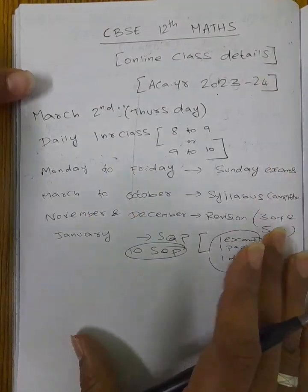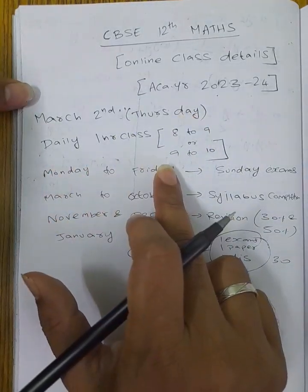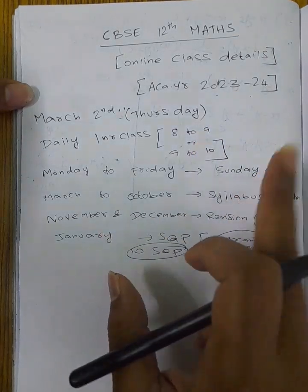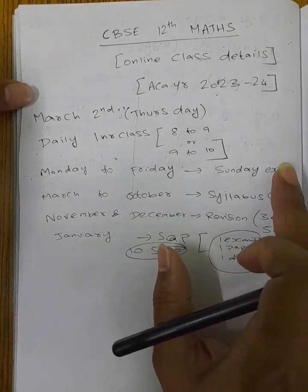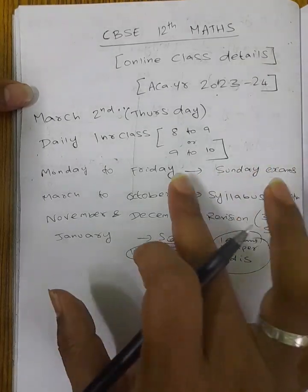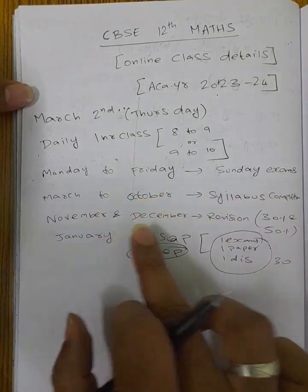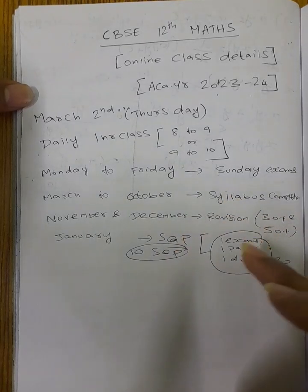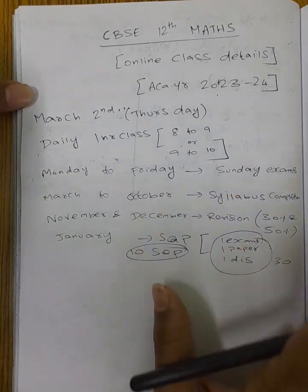This is the total schedule. Classes start in March, there are daily classes, every Sunday exam, daily one-hour classes. Saturday prepare. I will send a question on Saturday. The syllabus is complete by October. November and December: 30% of the exam, 3-3 units. There are 10 units. In January through October, total board exam pattern. You can send the exam.